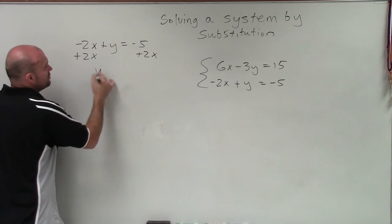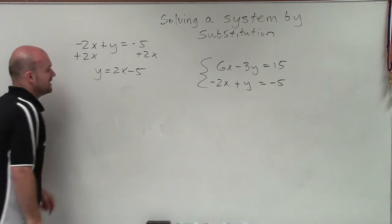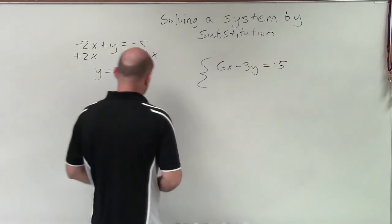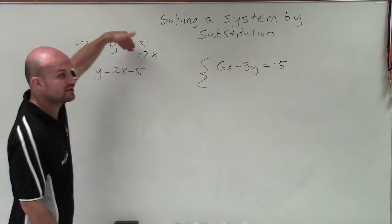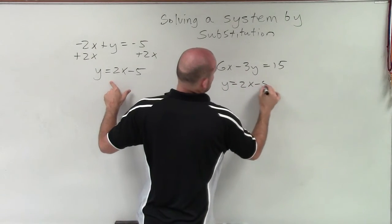So I do that by adding 2x on both sides. And now I have a variable isolated, which is 2x minus 5. So now what I do is I rewrite this second equation as my new equation with the variable isolated. So I have y equals 2x minus 5.